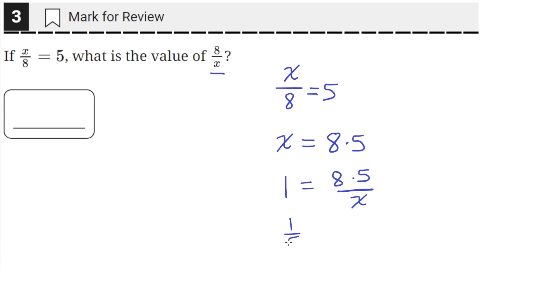This will give us 1 fifth equals 8 over x. Because when we divide by 5, 8 times 5 divided by 5 is just equal to 8. And then 1 divided by 5 is 1 fifth.